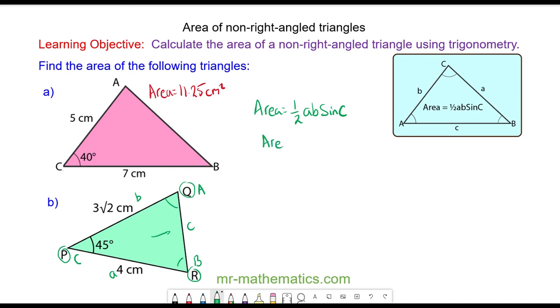So the area, and we can substitute these values in, is one half of A, which is 4, times B, which is 3 root 2, multiplied by the sine of C, which is the sine of 45.